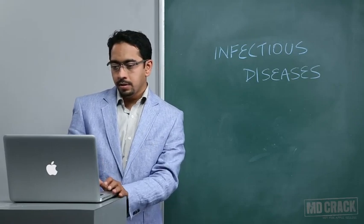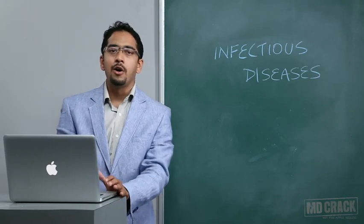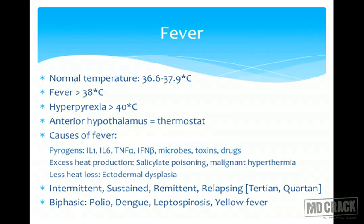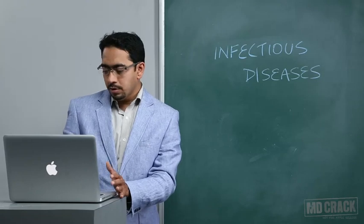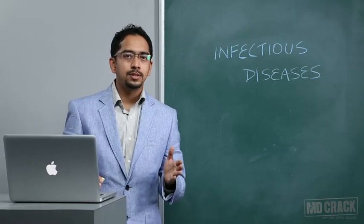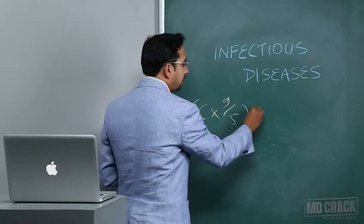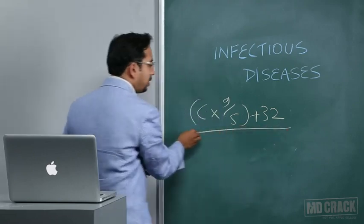Coming to fever — fever is the hallmark of infection, indicating that something is going wrong in the body and there is probably an infection giving rise to fever. The normal temperature in the pediatric age group is defined as 36.6 to 37.9 degrees Celsius. It is an international convention to measure and express temperature in degrees Celsius rather than Fahrenheit. The conversion formula is: Celsius × 9/5 + 32 = Fahrenheit reading.